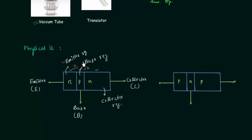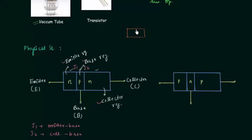As we have three regions, two junctions are formed — junction J1 and junction J2. Junction J1 is formed between the emitter region and base region, so we call it the emitter-base junction. Junction J2 is formed between the collector region and base region, so junction J2 is called the collector-base junction. Just like in a PN junction diode we have a depletion layer across the junction, we have a depletion layer across junction J1 and also across junction J2.